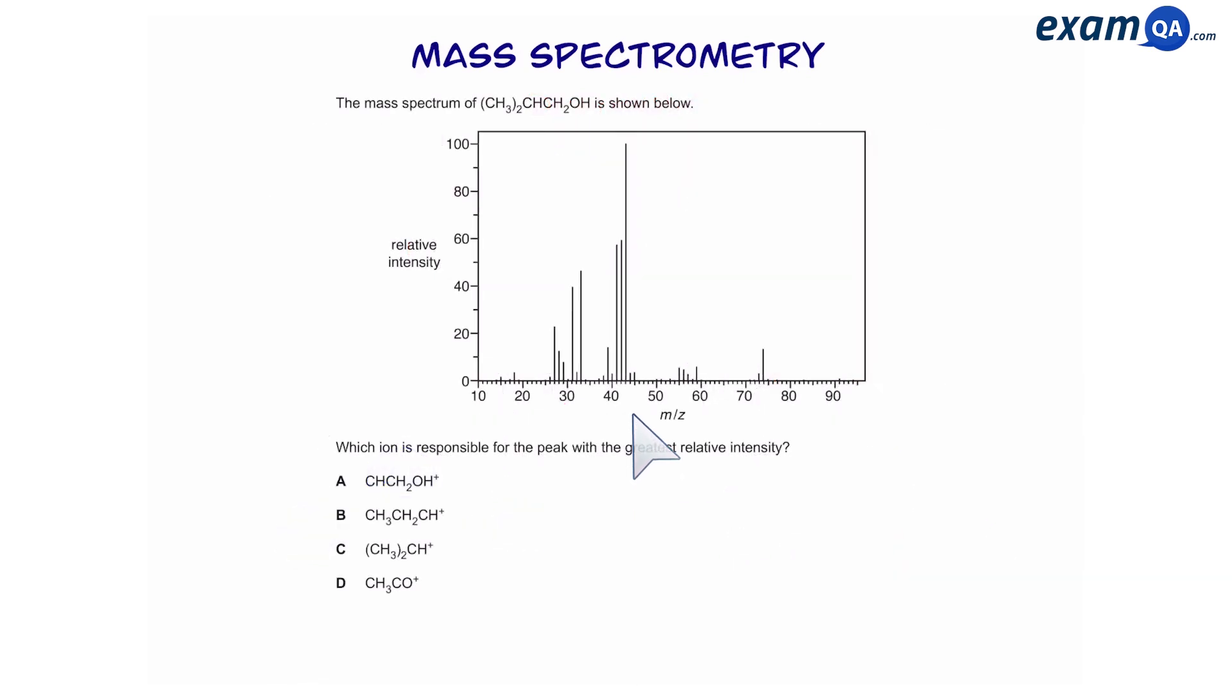Here, we've been given the mass spec of an alcohol. And the question says, which ion is responsible for the peak with the greatest relative intensity? This peak has the greatest relative intensity. It has a value of 43. So, let's look at the four ions and write down their M values. 44, 42, 43 and 43. So, there are two ions which both have a value of 43. But there can only be one answer.